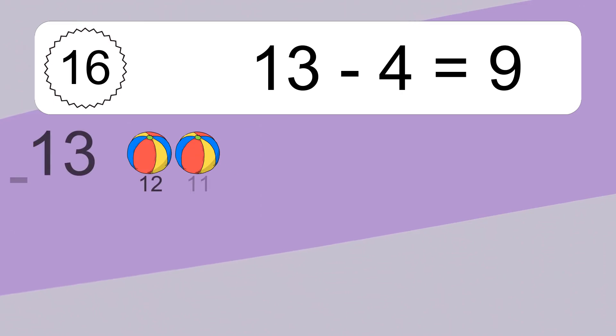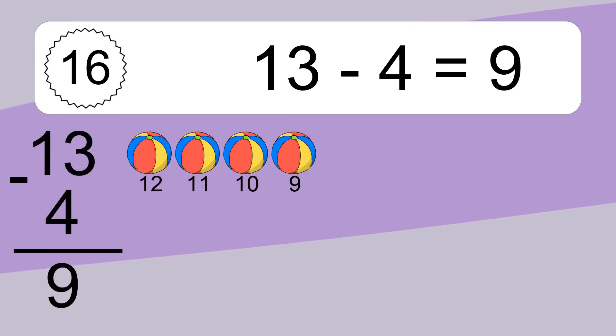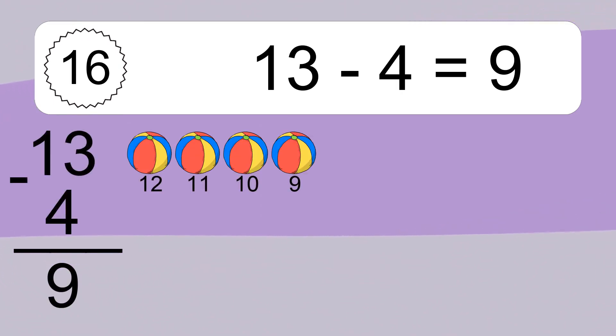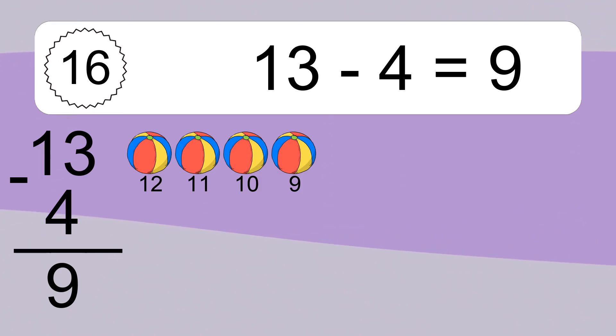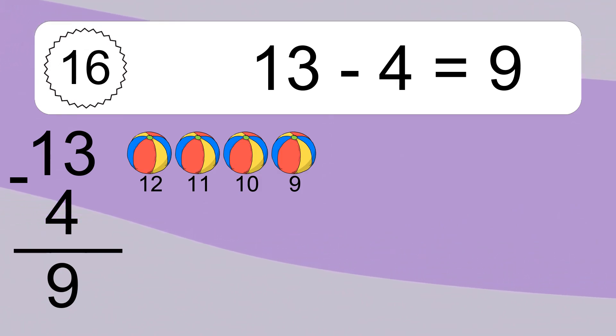13 minus 4 equals what? 13 minus 4 equals 9. Let's count it: 12, 11, 10, 9.